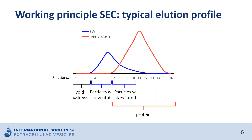In this graph, you can see what a typical elution profile of a SEC column looks like. On the x-axis, this shows the fractions collected from the column after adding the sample on top. Typically, these fractions are about 0.5 or 1 ml in volume. On the y-axis, you can see the concentration of EVs in blue and free protein in red. The very first fractions are usually not collected because they are devoid of any EVs or protein. This volume is called the void volume, which is the volume of the mobile phase of the column — basically the buffer that is around the SEC beads.